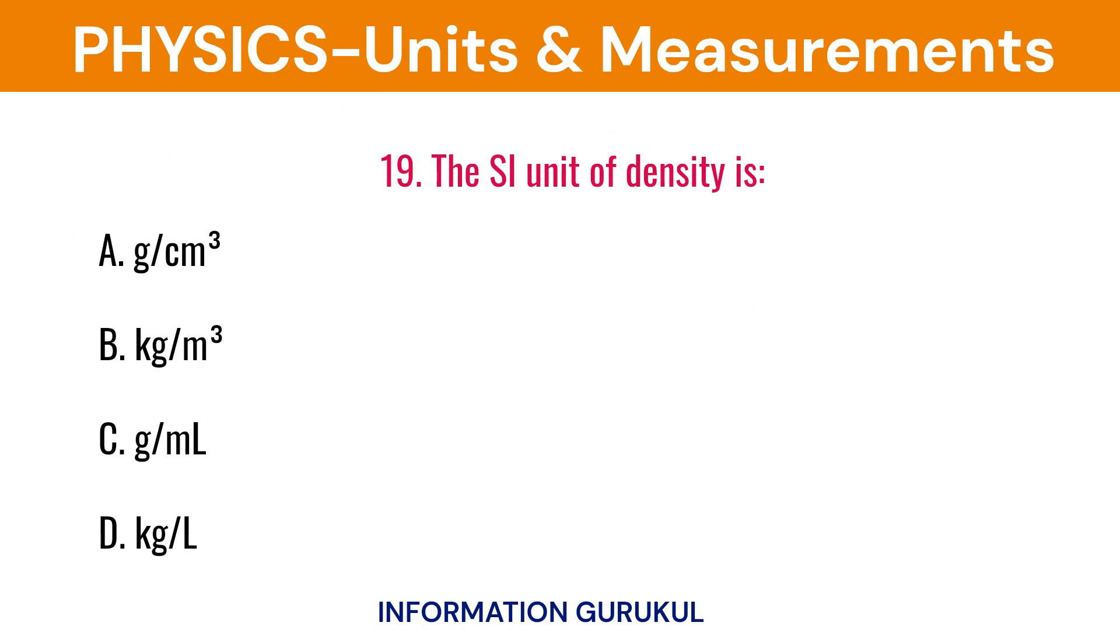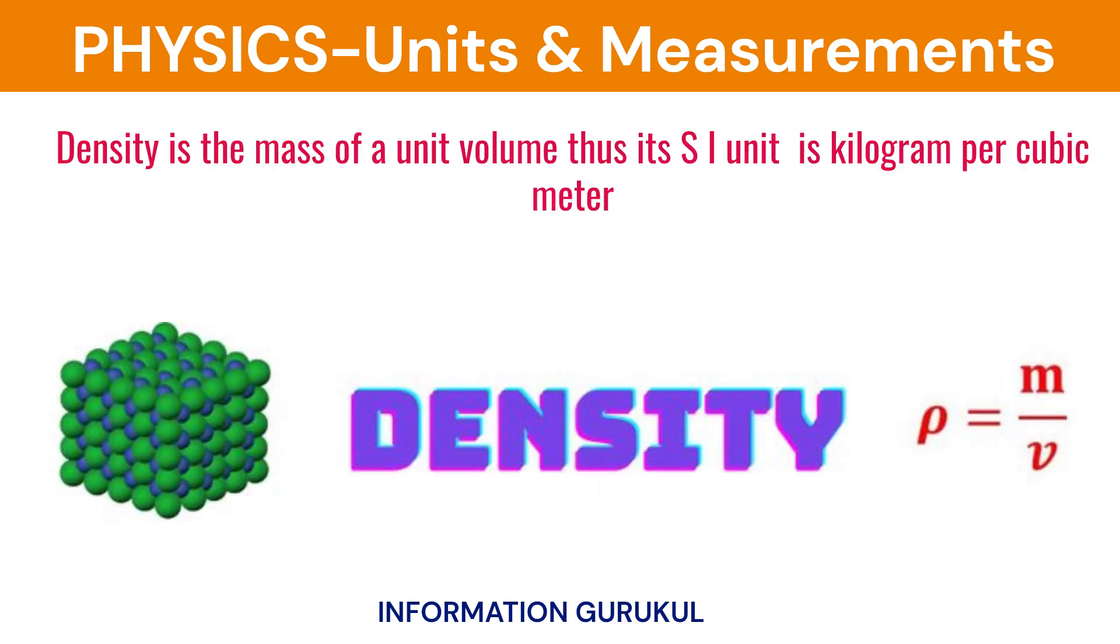The SI unit of density is kg per cubic meter. Density is the mass of a unit volume, thus its SI unit is kg per cubic meter.